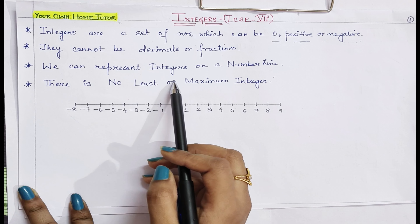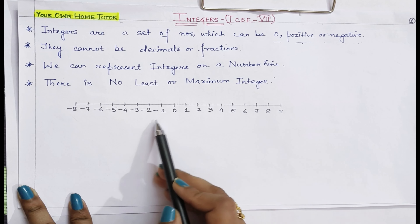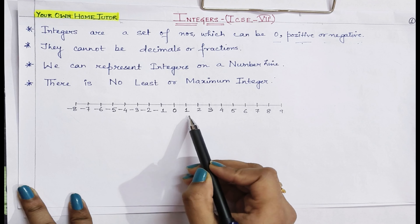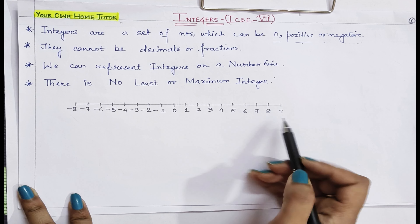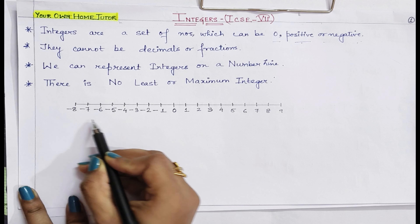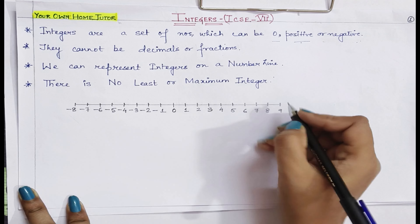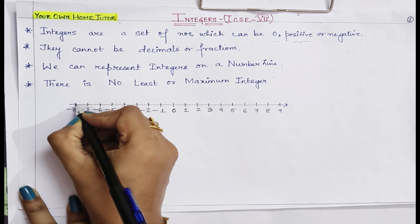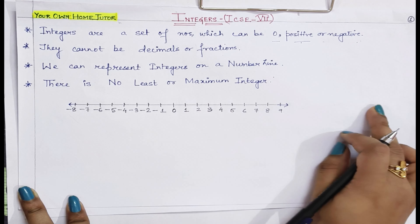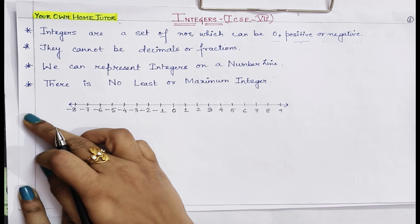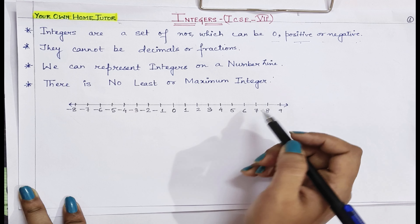We can represent integers on a number line. I have drawn a number line with 0 at the center. On the right-hand side are all the integers which are positive and greater than 0. On the left-hand side are those integers which are negative and less than 0. I have put an arrow in both directions because it can go up to any limit in both directions, be it towards positive integers or towards negative integers.